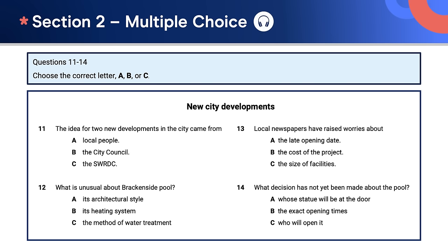Remember to download the answer sheet and get access to more IELTS listening practice questions for free. Let's now move on to section three. In this section, you'll usually hear three people talking in a more academic context. Typically in section three, if you have multiple choice questions, they're going to be less detail oriented and will really test your ability to understand how the details relate to each other in a more meaningful way.